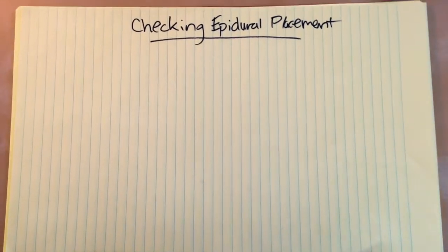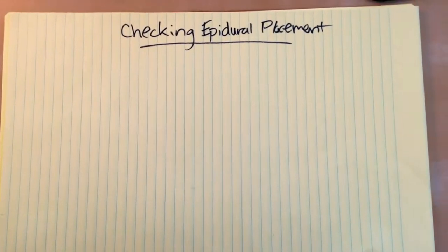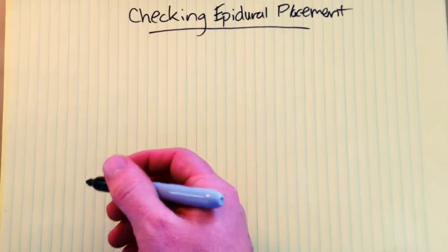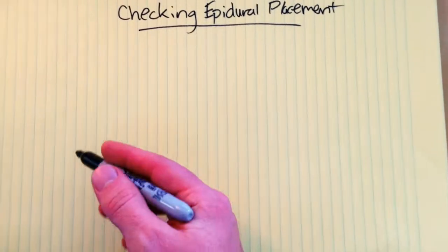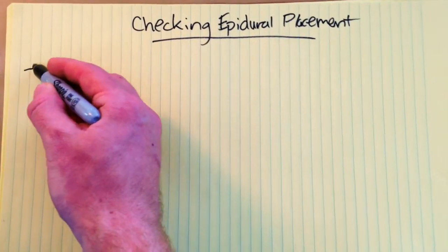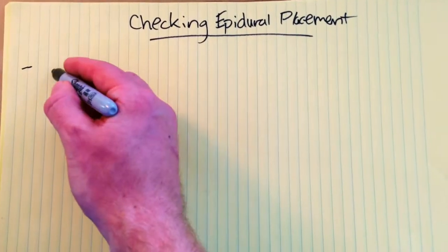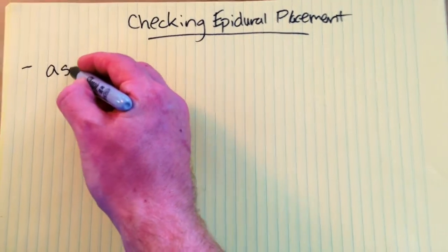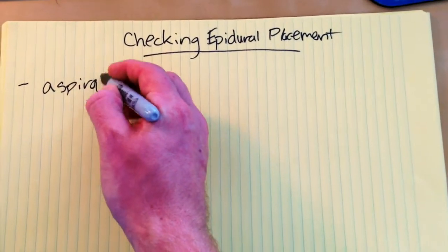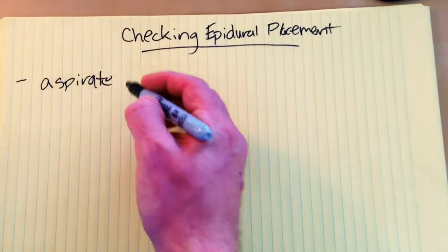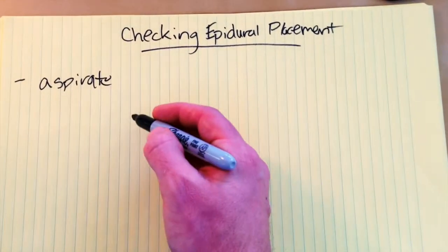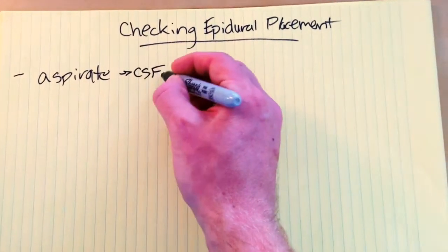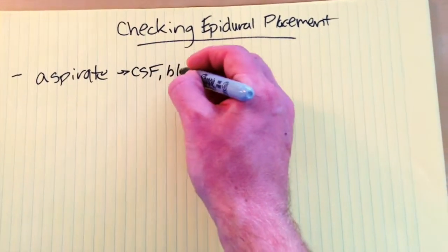So I thought I'd make a quick video about what I thought. The first thing I kind of thought of is — well, in a pinch you can always aspirate. Stick your syringe on the end of the epidural catheter and aspirate, looking for CSF or blood.